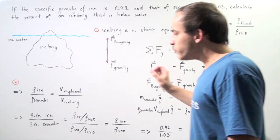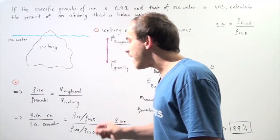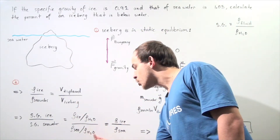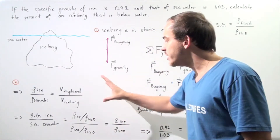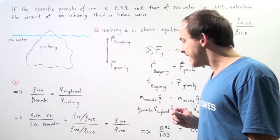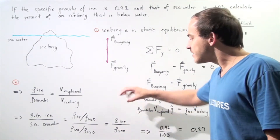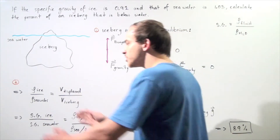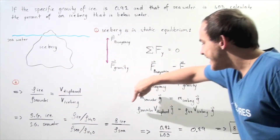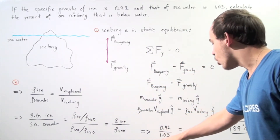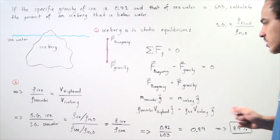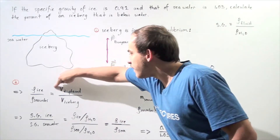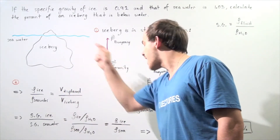If we take the specific gravity of ice and divide it by the specific gravity of seawater, the density of water (H₂O) appears in both numerator and denominator and cancels, leaving us with the ratio of the density of ice to the density of seawater — exactly what we need. Plugging in 0.92 for ice and 1.03 for seawater, this ratio equals the volume displaced divided by the volume of the entire iceberg.